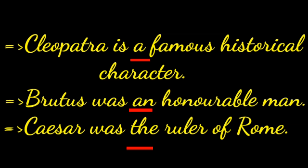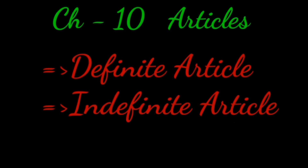The words a, an, and the are called articles. These are used to indicate which persons or things we are referring to in a sentence. They are used before singular nouns. Today we are going to learn about articles.